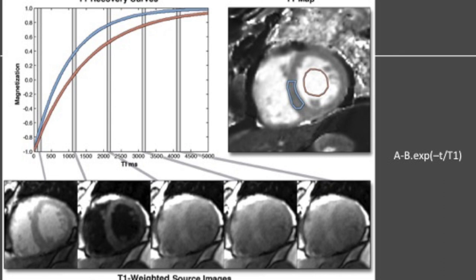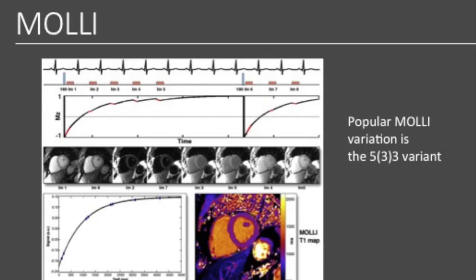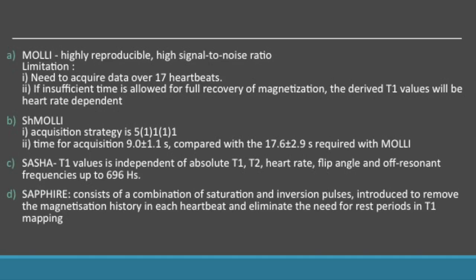The native T1 value reflects myocardial disease involving the myocyte and the interstitium. The use of gadolinium allows measurement of the extracellular volume fraction, which reflects the interstitial space. T1 values can be obtained by different techniques, for example the inversion recovery as well as saturation recovery techniques. This is an example of an inversion recovery sequence where different T1-weighted source images were obtained and the pixel intensities were fitted on the T1 recovery curve to obtain the final T1 map. The most popular sequence supplied by vendors is MOLLI — the modified Look-Locker inversion recovery sequence — and its popular variation.